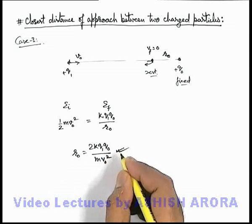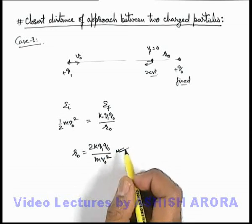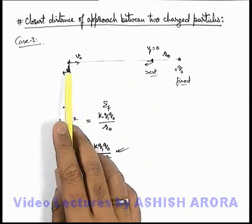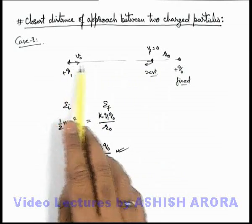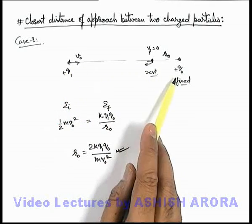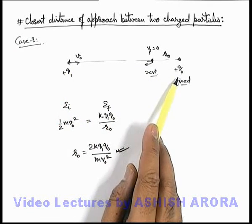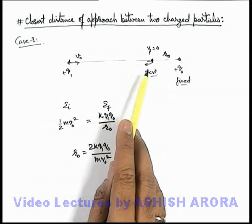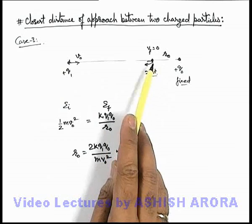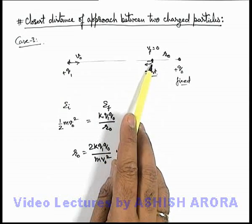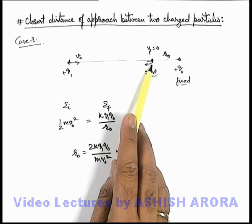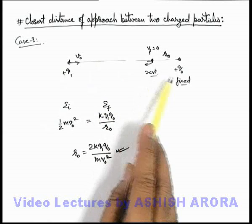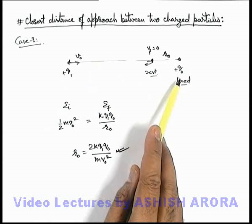The closest distance of approach is calculated because as the charge gets close to the fixed charge, its kinetic energy is decreasing and interaction energy is increasing. At the distance of closest approach, the total kinetic energy is fully transformed into interaction energy.